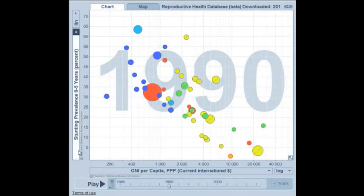Here on the left axis is the percent of children with stunting from chronic malnutrition, going from 0 to 70%. And on the bottom axis is gross national income per person, ranging from $100 up to $40,000.